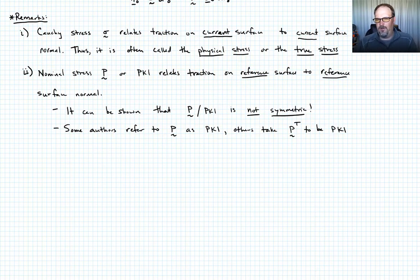And the other thing that I'll point out is that there's some inconsistency between authors as to how it's used. So some authors refer to the nominal stress P as the pK1 stress. Others take the transpose of the nominal stress to be pK1. Of course, this only matters because in the Cauchy stress, if we took the transpose, we just recover the original stress because it's symmetric. But in this case of the non-symmetric case, it matters.